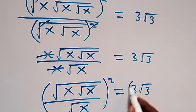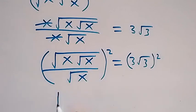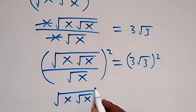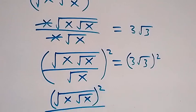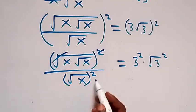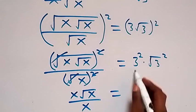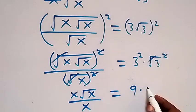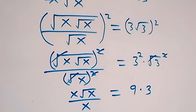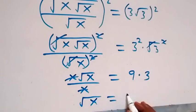Let's square both sides again. This square affects both the numerator and denominator. We have square root of x times square root of x squared, divided by root x squared, which equals 3 squared times root 3 squared. The squares cancel the square roots, giving us x times root x over x, which equals 9 times 3. Canceling x, we have root x equals 27.